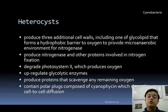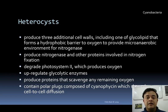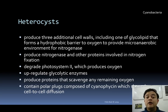Heterocysts also contain biochemical molecules that degrade Photosystem II, because PS2 produces oxygen — if PS2 were active in the heterocyst, nitrogenase would be swimming in molecular oxygen and become dysfunctional. Heterocysts also up-regulate glycolytic enzymes, leading to more glycolysis and breakage of sugars. Additionally, they produce proteins that scavenge remaining molecular oxygen to ensure the environment is micro-aerophilic, almost anaerobic.